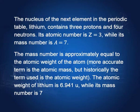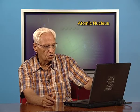The mass number is approximately equal to the atomic weight of the atom — not exactly, but approximately. The more accurate term is atomic mass, but historically the term used is atomic weight. The atomic weight of lithium is 6.941 u, where u is approximately the mass of a proton or a neutron. The atomic weight is 6.941 u, while its mass number is seven. So why is the atomic weight not exactly seven?